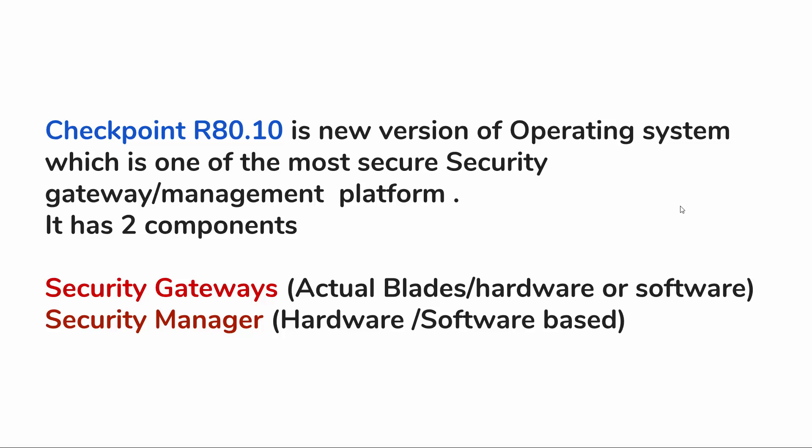R80.10 is a new version of the operating system which is one of the most secure gateway or management platforms. It has two components: the base OS, and then security gateways — which you can call blades, and can be hardware-based or software-based — and a security manager, for which different versions are available. You can have it on hardware, software, VM, Windows platform, or VMware.